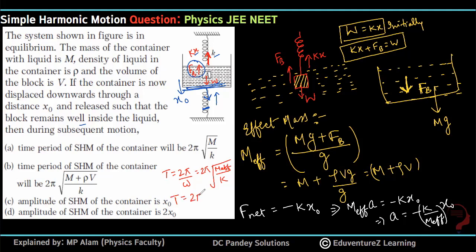k effective by mass, k by mass effective. So t equals 2 pi root under mass, how much is mass? M plus rho V upon k. So see, here this answer comes correctly, option b.